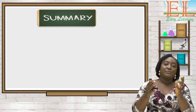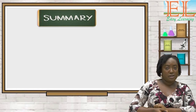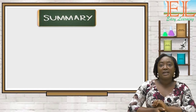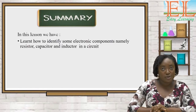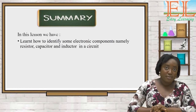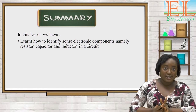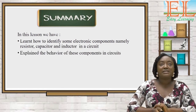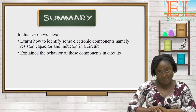This brings us to the end of our lesson for today. In this lesson we have learned how to identify some electronic components — namely resistors, capacitors, and inductors — and we have explained the behavior of these components in a circuit.